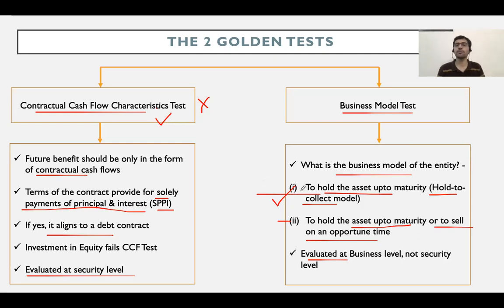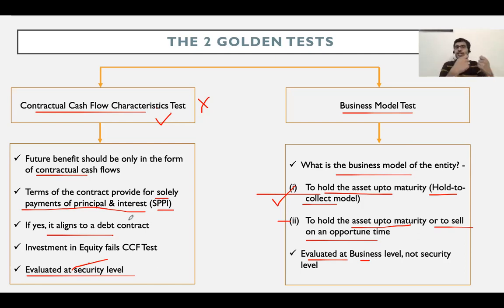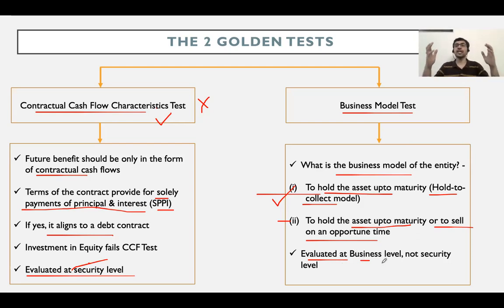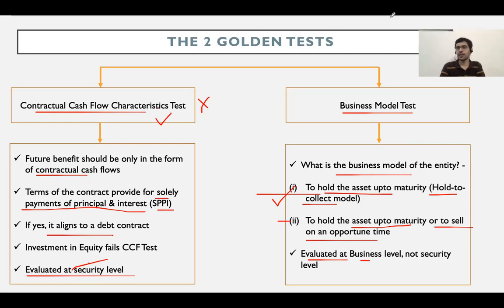To be precise, the business model test is not evaluated at an entity level — an entity may have multiple divisions. It is evaluated at a division or business line level. Within a division, I evaluate the business model for that entire division collectively, not for each individual security. So the CCF test is at a security level; the business model test is at a business or division level — not individual security level, and not entity level either.